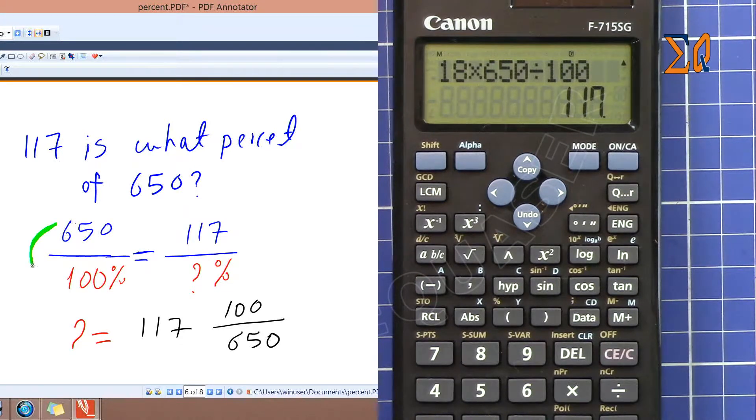So we can do it the same way because 650 is 100 percent, just write it. And then now this time 117 is known and the percent is unknown, so make sure that you write the percent at the bottom. Then your question will be very simple, do the cross multiplication.